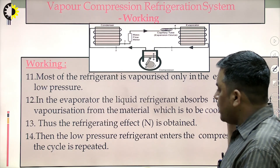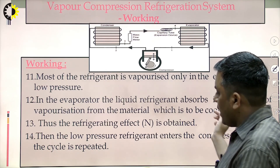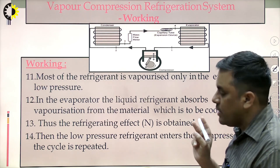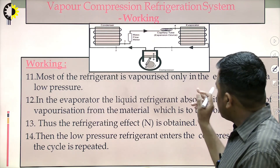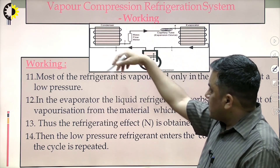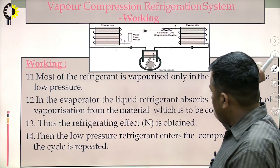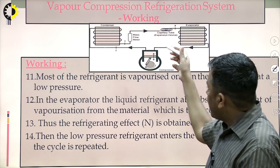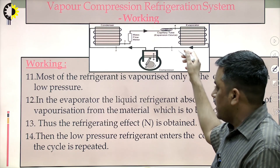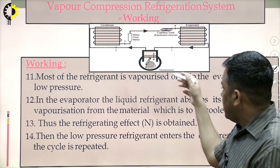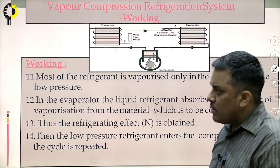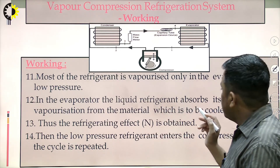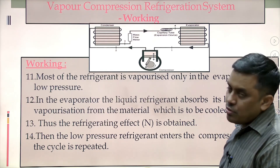These are the two refrigeration systems discussed: the air refrigeration system and the vapor compression refrigeration system. I will be discussing the vapor compression refrigeration system further in connection with air conditioning and domestic refrigerators. I hope this discussion helps you understand what the vapor compression refrigeration system and air refrigeration system are. Thank you for watching the video.